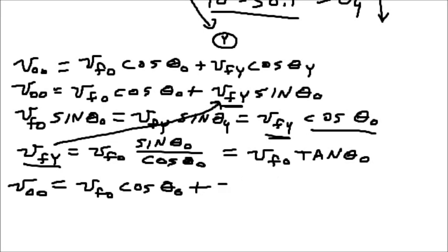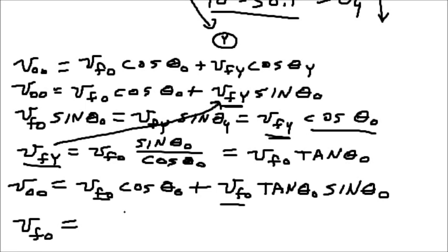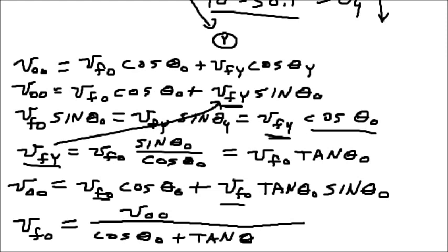The final orange disk, tangent theta orange, and then times another sine theta orange. Solve for vf zero. The final of the orange disk is going to equal the original of the orange disk all over cosine theta orange plus tangent theta orange sine theta orange.